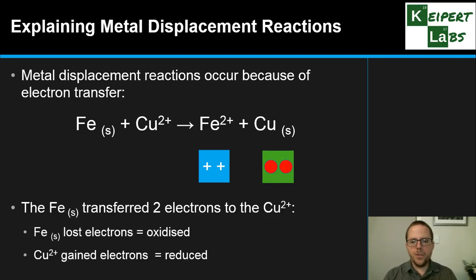So the iron transferred two electrons. The iron metal lost electrons, therefore we'd say it's oxidized. The copper 2+ gained electrons, so we'd say that it is reduced. So metal displacement reactions are able to happen because of oxidation and reduction. It's the mechanism, the underlying process that allows this to happen. And so that's the loss and gain of electrons.